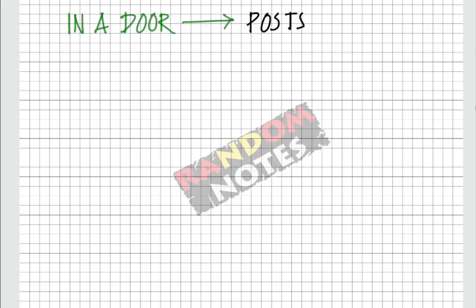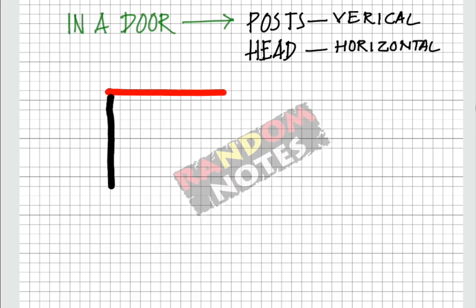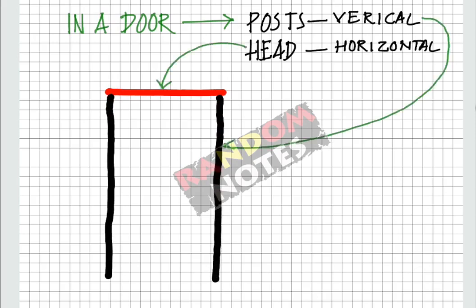A door frame has three members. There are two vertical members called posts and one horizontal member called head. This is the floor line.